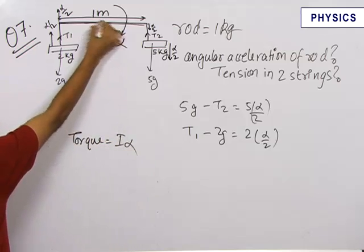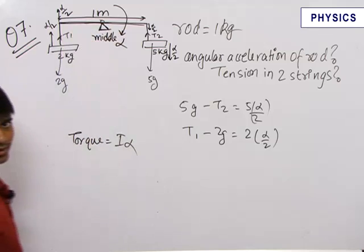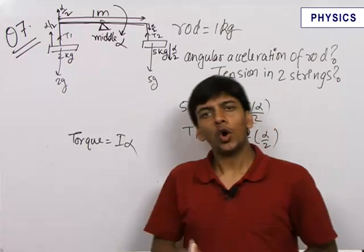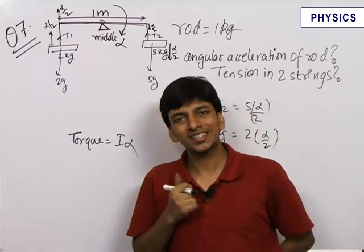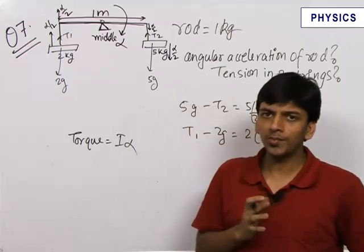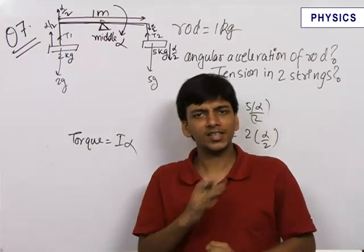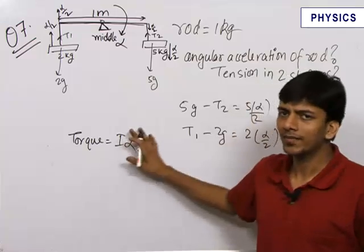We can write this equation about the center point because this is at rest. So always whenever you are writing the equation of torque equals I alpha, always write it about a point whose acceleration is zero or more importantly about a point which is at rest, or otherwise you can always safely apply the equation of torque about the center of mass.